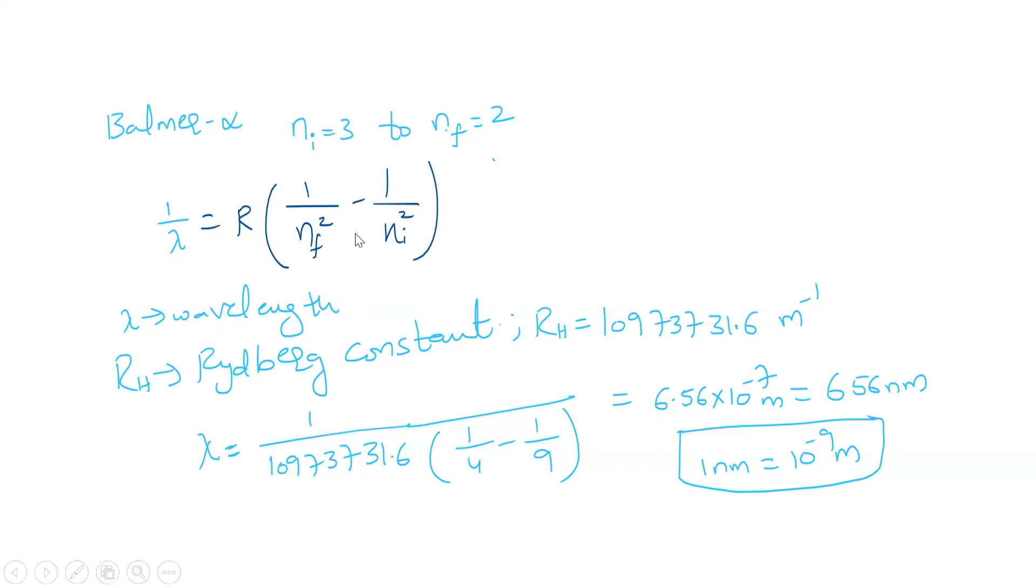This is what the Balmer alpha line gives as the value for hydrogen spectrum. This is only applicable for hydrogen spectrum. This is how we calculate the wavelength of Balmer alpha line.